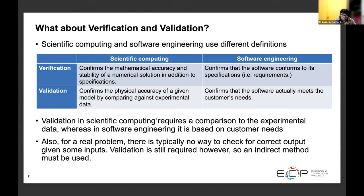How does verification and validation relate to testing? The terminology is a little different in scientific computing versus software engineering. In software engineering, verification means checking that the software conforms to the design and requirements — beyond testing, to ensure all documented requirements are met. Testing in software engineering plays an important role in the verification process. In scientific computing, verification aims to ensure that the code is a correct representation of the underlying mathematical model, and often involves comparing the model solution to a reference solution and checking for convergence.